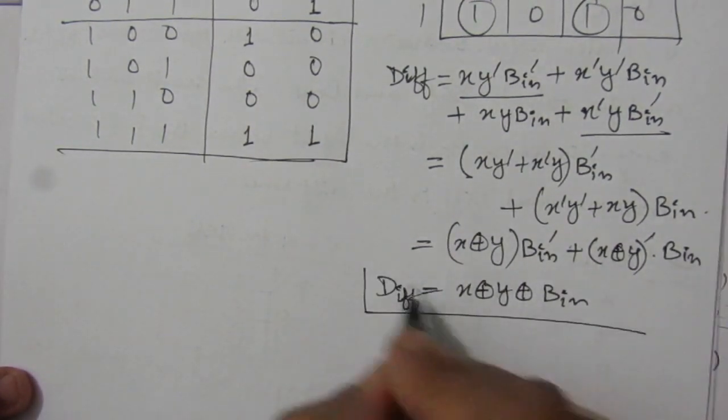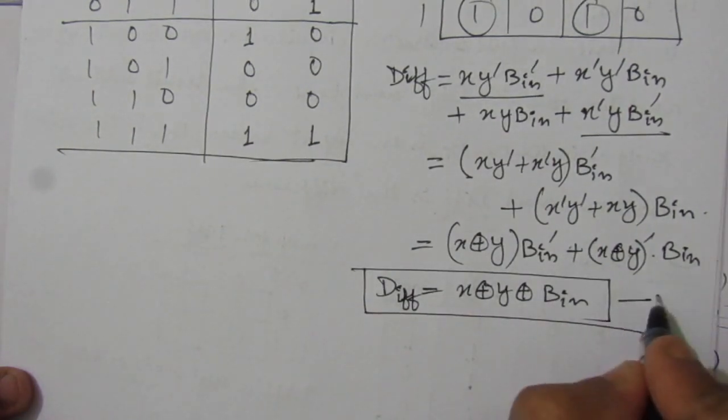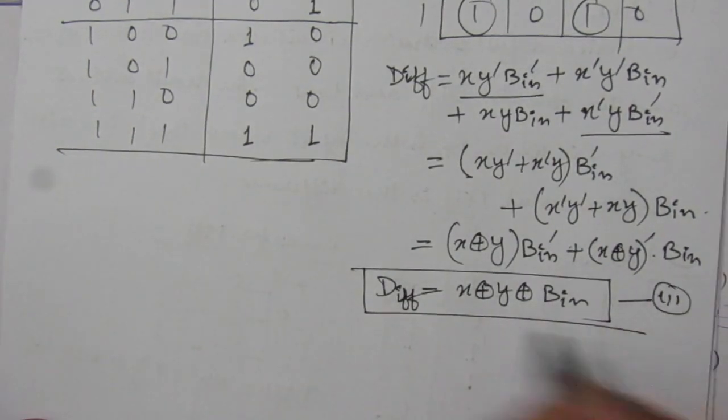Recognizing the form A·B_bar + A_bar·B, this simplifies to DIFF = X XOR Y XOR B_in. This is the expression for the difference of the full subtractor.